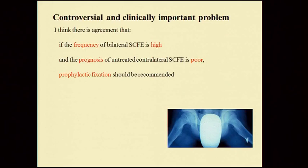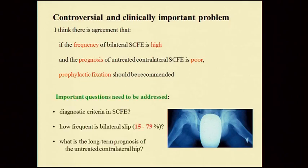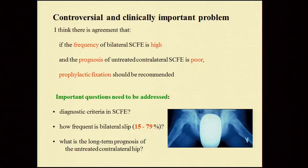This is a controversial and clinically important problem. There is agreement that if the frequency of bilateral slipped epiphysis is high and the prognosis of the untreated contralateral hip is poor, then prophylactic fixation should be recommended. But important questions need to be addressed: What are the diagnostic criteria? How frequent is the bilateral slip? It has been reported with enormous variation from 15% to 80%. And what is the long-term prognosis of the untreated contralateral slip?